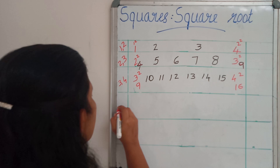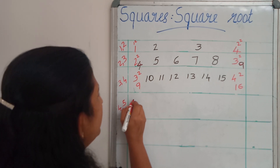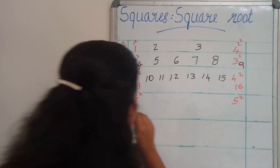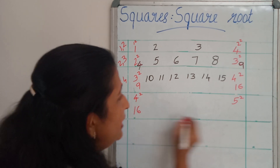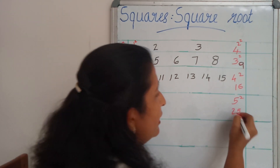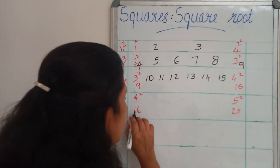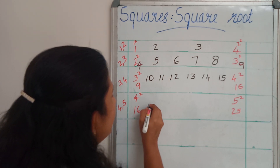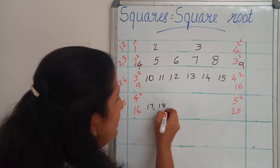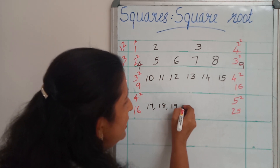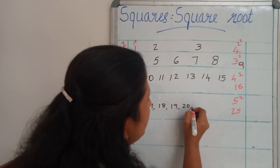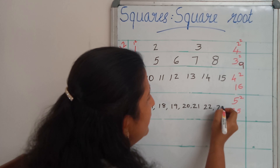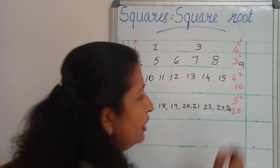Next, 4 and 5. Find out 4 square and 5 square. What is 4 square? That is 16, and 5 square is 25. So I am going to write down all the natural numbers in between 16 and 25: 17, 18, 19, 20, 21, 22, 23, then 24.